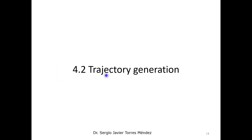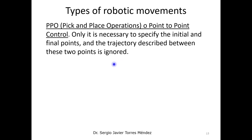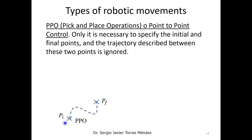In this section we are going to focus on trajectory generation. In a robotic system we have two types of motions. The first one is called the pick-and-place operation or point-to-point control. In this case, the end-effector of the robot needs to move from an initial position to a final position, and you can select any trajectory between these two points — you only need to avoid collisions and try to save energy for the actuators.